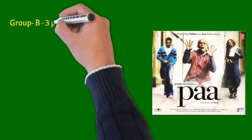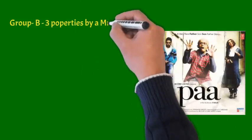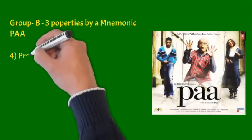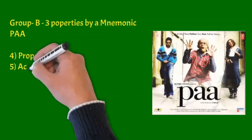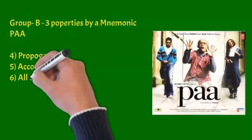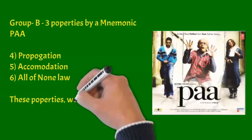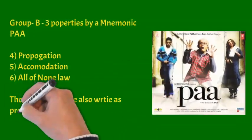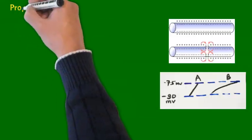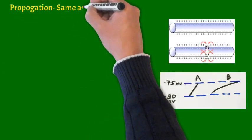This is our first group, three properties. Let us take second group in which we will derive three properties by a mnemonic PAA. From P, propagation. From A, accommodation. And from another A, all or none law. We all know that these three properties we also write in the property of action potential in nerve also.